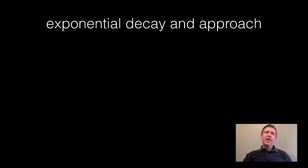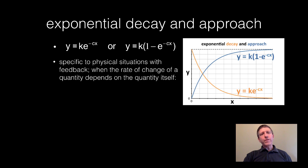Another relationship we're going to talk about is exponential decay and approach. I'm not going to talk about this too much now but it is of the form y equals ke to the negative cx where k and c are constants, or y equals k times the quantity one minus e to the negative cx. This is actually pretty common in physics specifically to physical situations with feedback, when the rate of change of a quantity depends on the quantity itself.